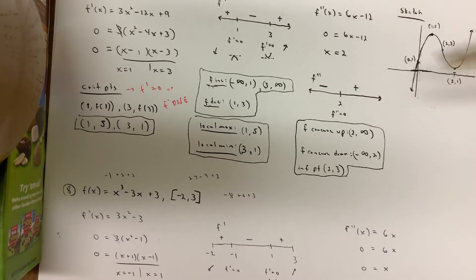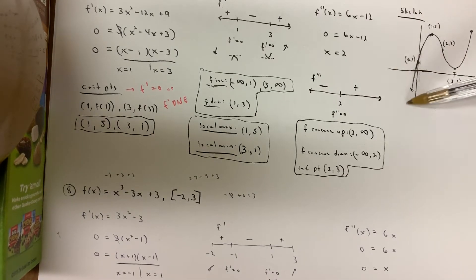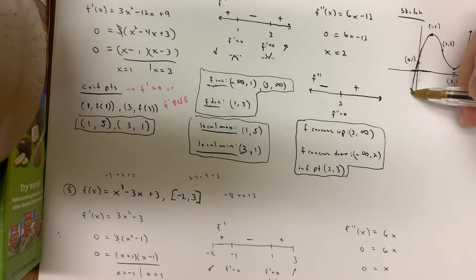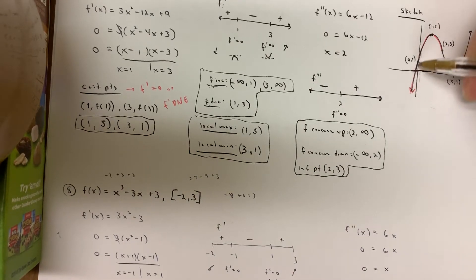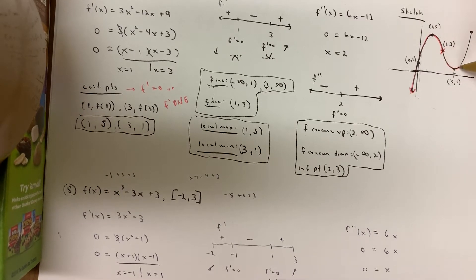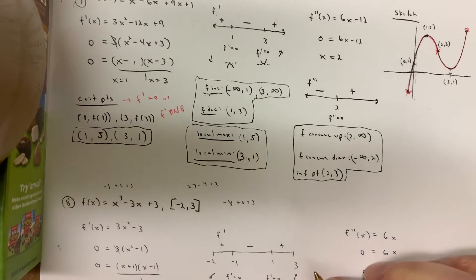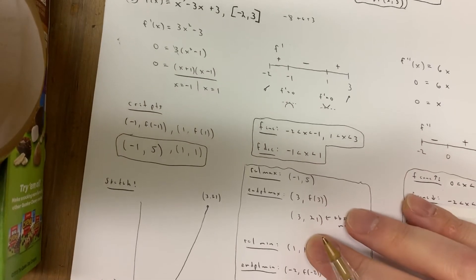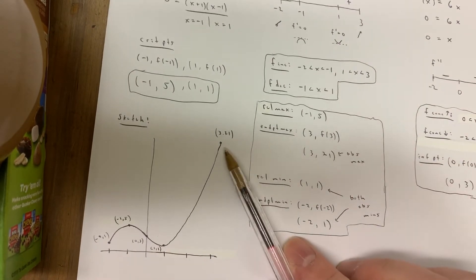From negative infinity to two the function is concave down — think about the shape of an 'n.' You can see from negative infinity all the way to two, the function looks like an n as it increases then decreases. Then you hit the inflection point and the rest of the way it looks like a 'u.' That's what's going on with that sketch.